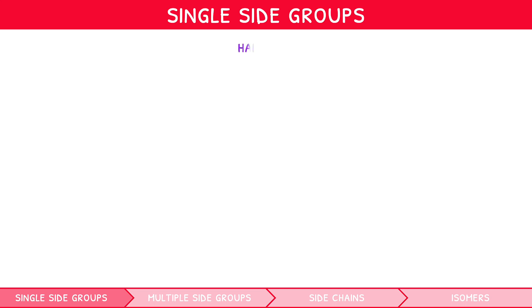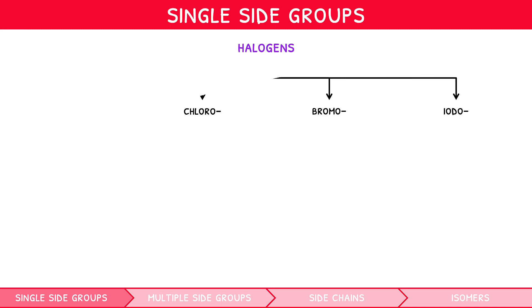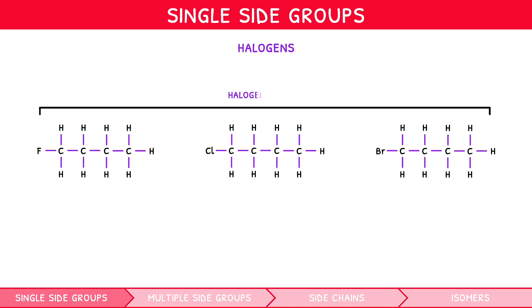The most common side groups you will encounter are the halogens, named fluoro, chloro, bromo and iodo. Let's consider three versions of butane, positioning a fluorine, chlorine and bromine group on the first carbon to create a species known as a haloalkane. These would be named fluorobutane, chlorobutane and bromobutane respectively.